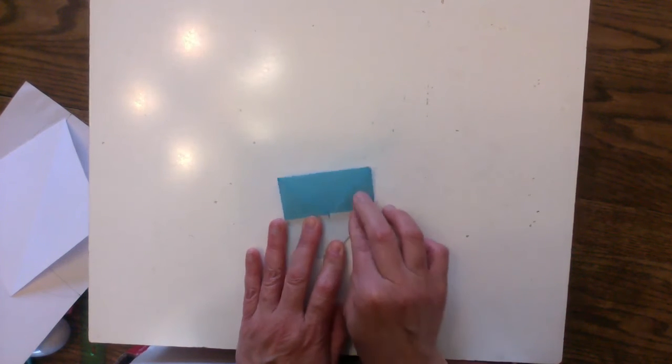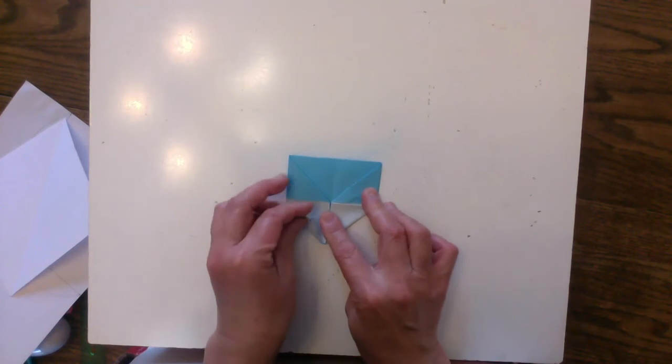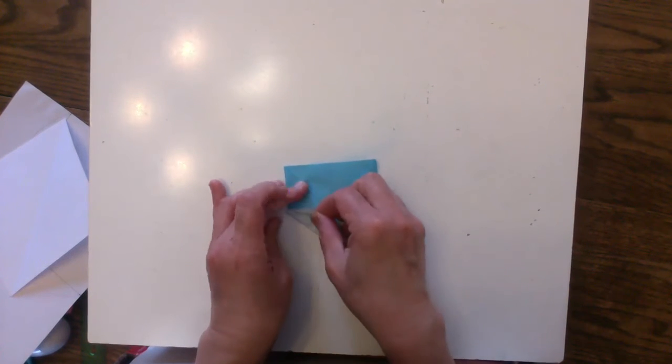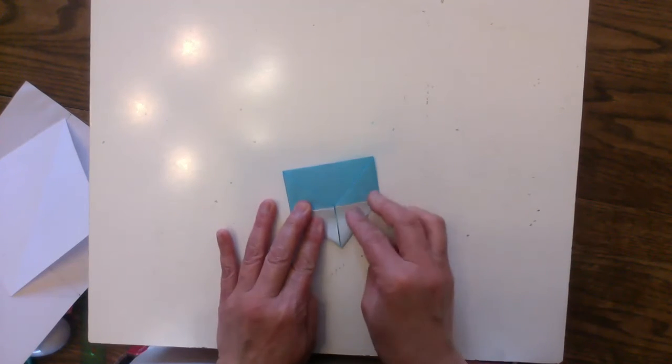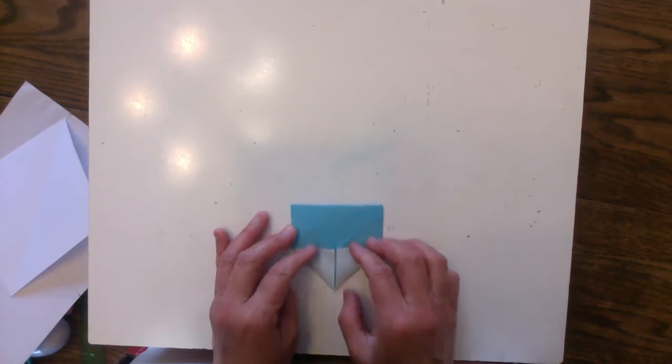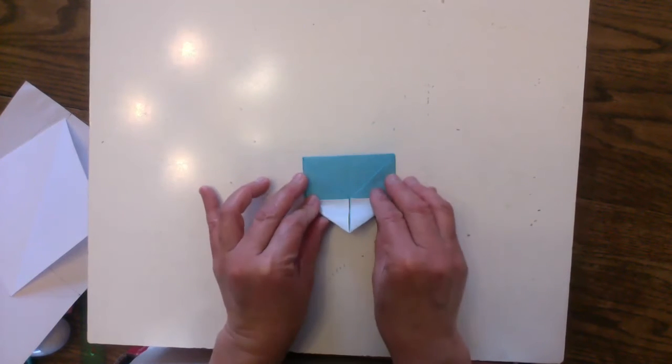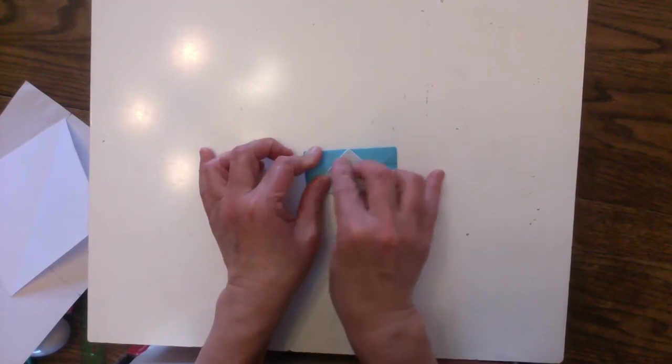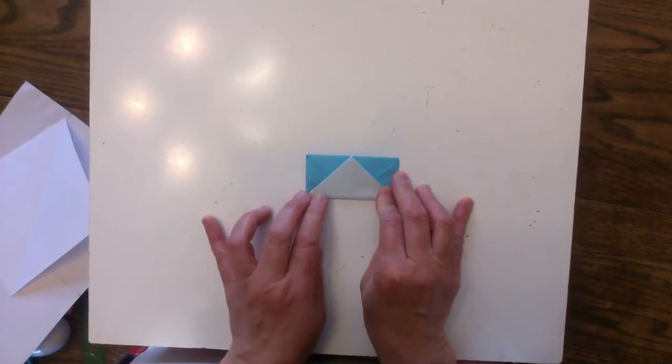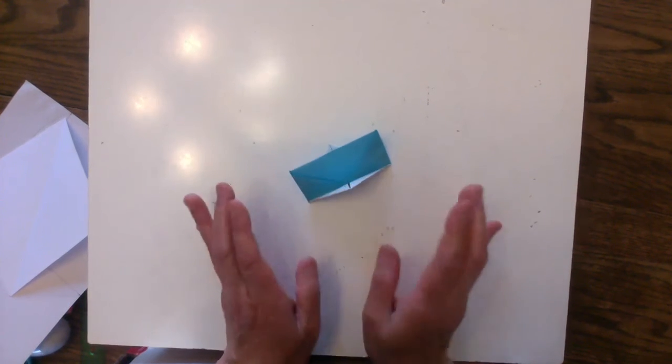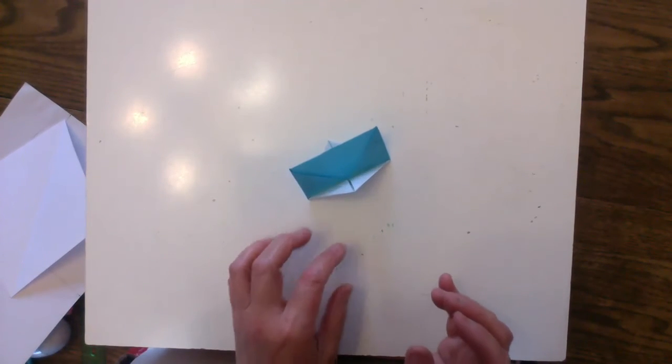We'll do the same thing on the other side. Fold it into a triangle and fold it up like that. Now that's all the folding that you have to do.